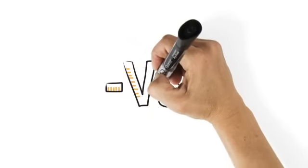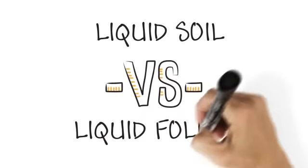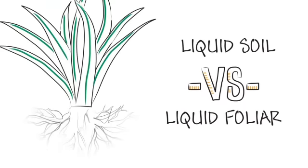it's important to understand the difference between liquid soil products and liquid foliar products. Liquid soil products, like granular products, rely on root uptake, which can be adversely affected by a host of factors. And if the roots are not working optimally, I'm in big trouble.